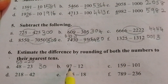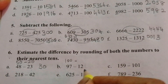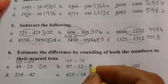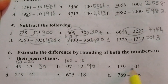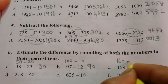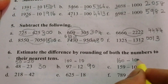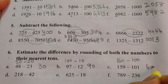B: Ninety-seven minus twelve — ninety-seven is nearest to one hundred, twelve is nearest to ten, so one hundred minus ten is ninety. C: One hundred fifty-nine minus one hundred one — one hundred fifty-nine is nearest to one hundred sixty, one hundred one is nearest to one hundred, so one hundred sixty minus one hundred is sixty.